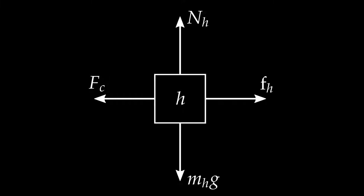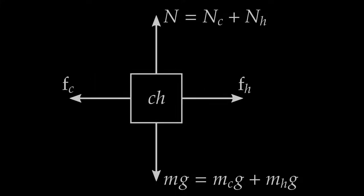Since the acceleration of the horse and cart are the same, I can draw a free body diagram for the cart and horse together as one object — just as I drew the cart's wheels and body as one object. I draw a box labeled CH for cart-horse. The weight of this combined system is simply the sum of the weights of the cart and horse, which is obvious reasoning.